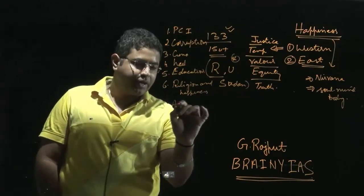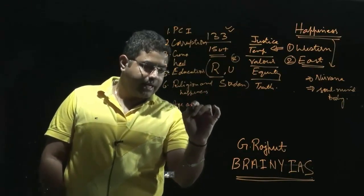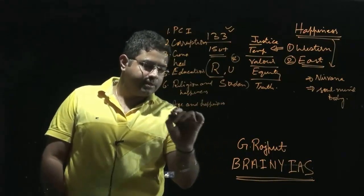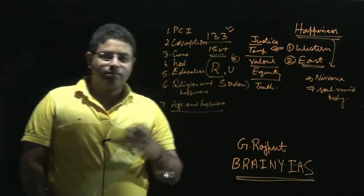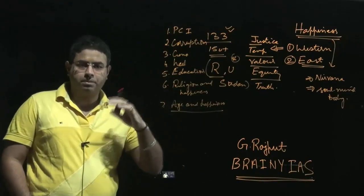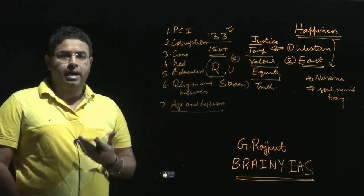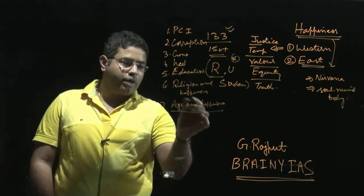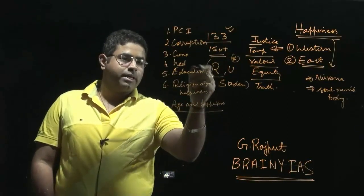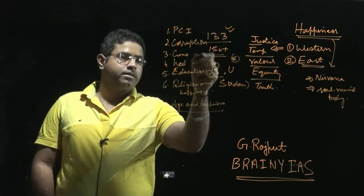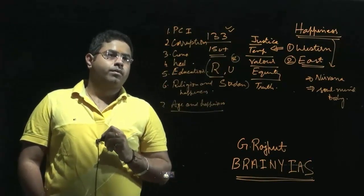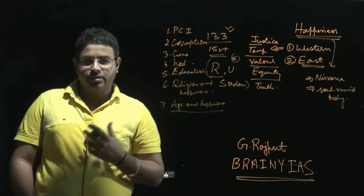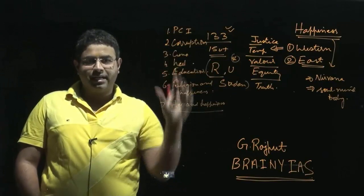The report has also thrown light on the aspect of age and happiness — as one gets older, how happiness undergoes a change with respect to age. It also examines how religion impacts one's happiness, and how education, health, corruption, and per capita income impact happiness.